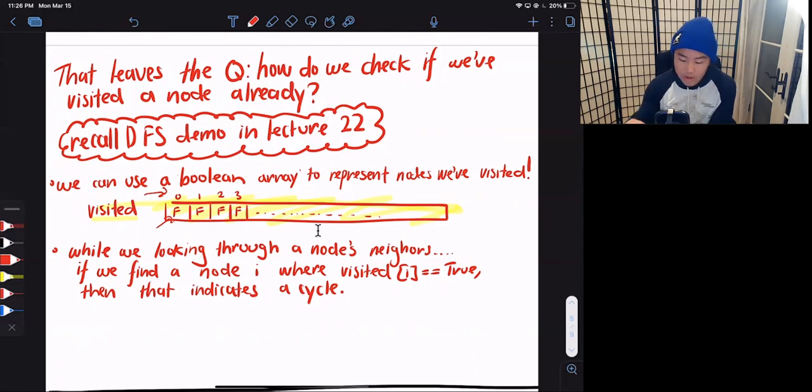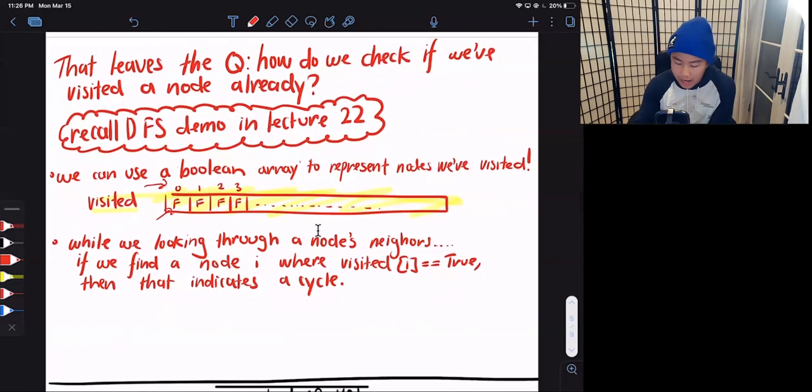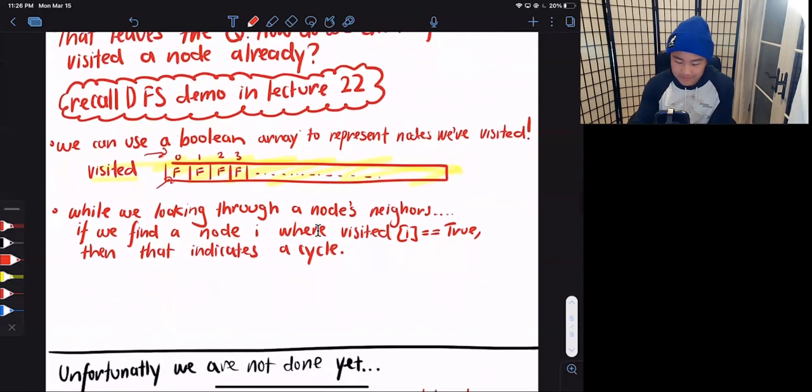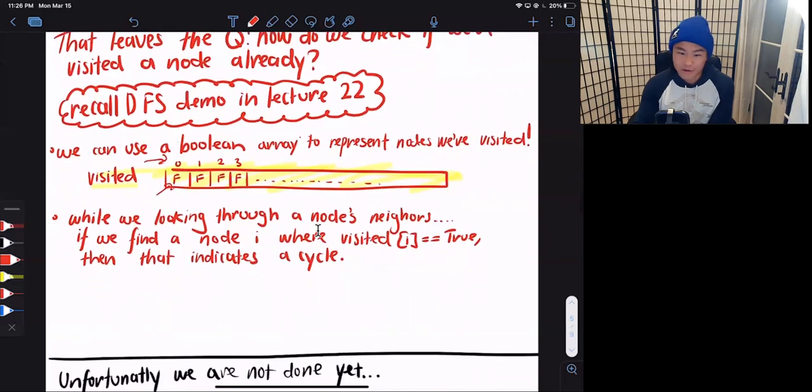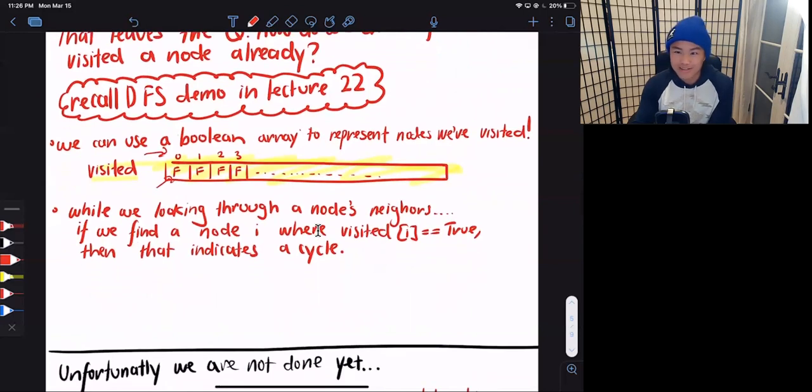Have we visited the node or not? So while looking through a node's neighbors, if we find a node i where visited i is equal to true, then that means we have found a cycle. Well, hold on, hold on. Unfortunately, we are not done yet.